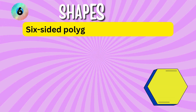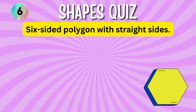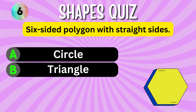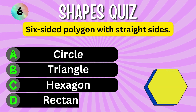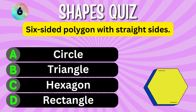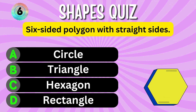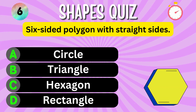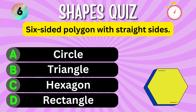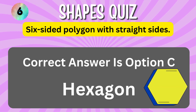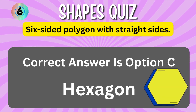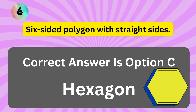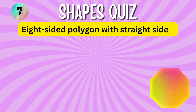A six-sided polygon with straight sides. Option A. Option B. Option C. Option D. You have 5 seconds to choose the correct answer. Your time starts now. The correct answer is Option C, Hexagon.